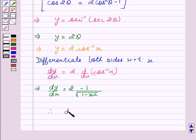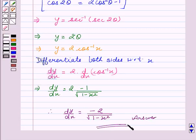Therefore, dy/dx equals minus 2 over square root of 1 minus x squared. Hope you understood the solution and enjoyed the session. Goodbye and take care.